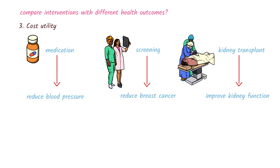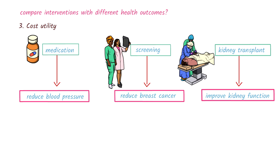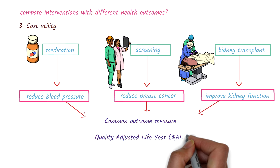Say we want to compare between drug therapy to reduce high blood pressure, breast screening to reduce the number of breast cancer cases, and a kidney transplant for end-stage kidney disease to improve kidney function. These are different health interventions that have different health outcomes. So in order to compare these different interventions, we need a common outcome measure. The measure most commonly used is called the Quality Adjusted Life Year, or QALY.